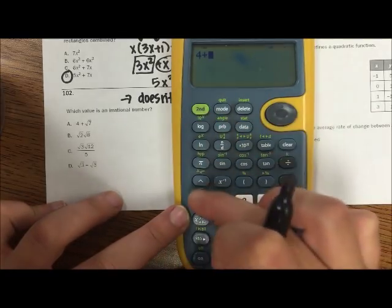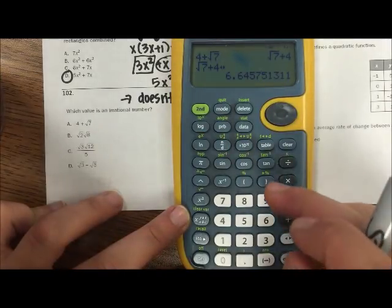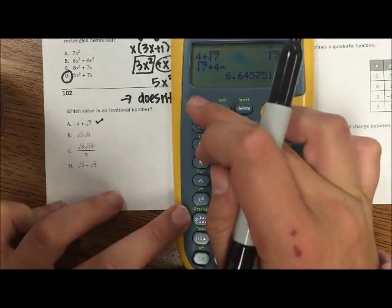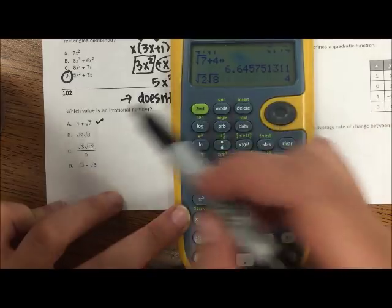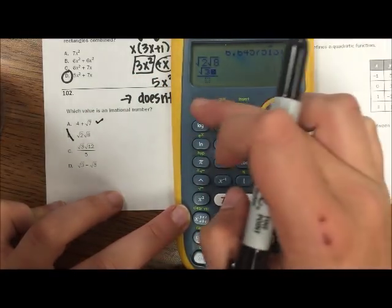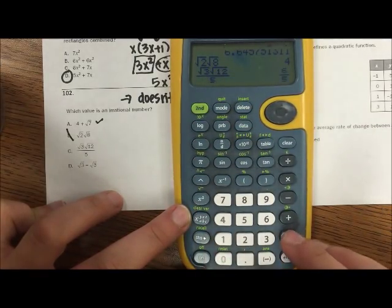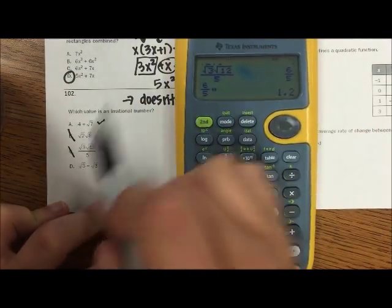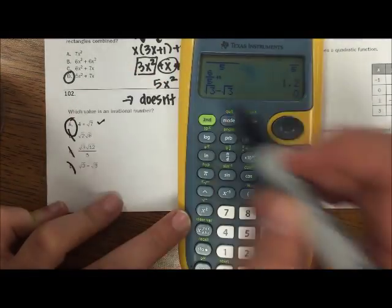So 4 plus the square root of 7. The decimal version has no distinct end, so that looks like it's irrational. Let's check the other ones. Square root of 2 times the square root of 8—I get 4, definitely not there. Square root of 3 times the square root of 12 divided by 5—I get 6 fifths, which is a solid decimal. And then square root of 3 minus the square root of 3 is just going to give me 0. So A would be our option.